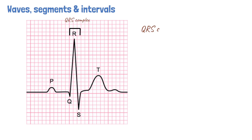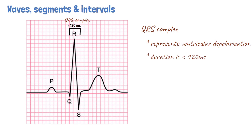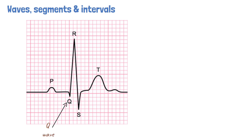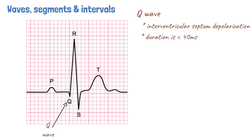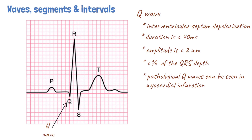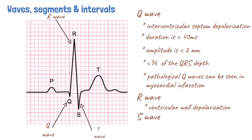The second wave on the ECG is the QRS complex, which is a series of 3 deflections that represent ventricular depolarization. The QRS complex is less than 120 ms in duration under normal circumstances. The first deflection in the complex, if negative, is called the Q wave, which represents the normal left to right depolarization of the interventricular septum. A normal Q wave is less than 40 ms in duration, less than 2 mm in amplitude, and less than one-fourth of the total depth of the QRS complex. Small Q waves are usually normal, but if they exceed these criteria, they are termed pathological Q waves and can be indicative of an evolving or past myocardial infarction. The first positive deflection in the complex is called an R wave, the largest wave in the QRS complex, representing depolarization of the thick ventricular wall. A negative deflection after the R wave is called an S wave, representing the depolarization of the Purkinje fibers.